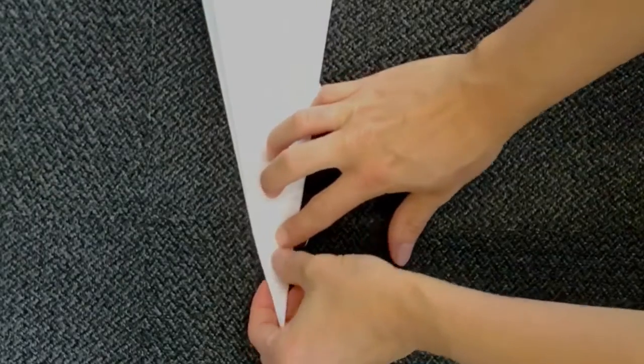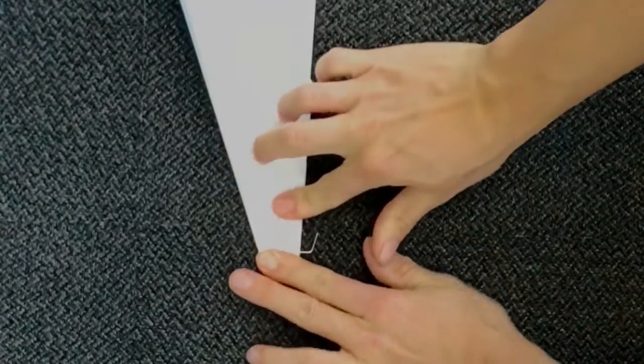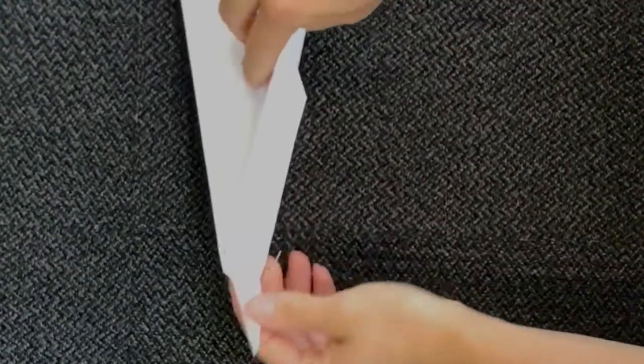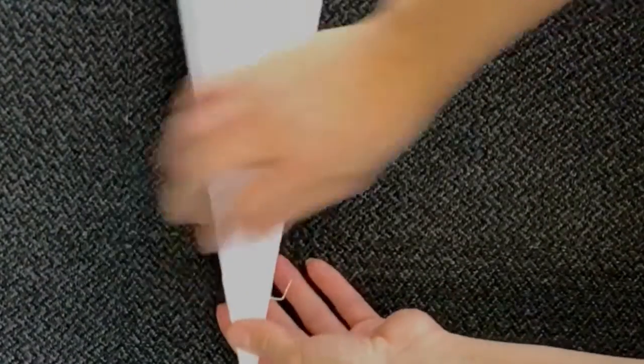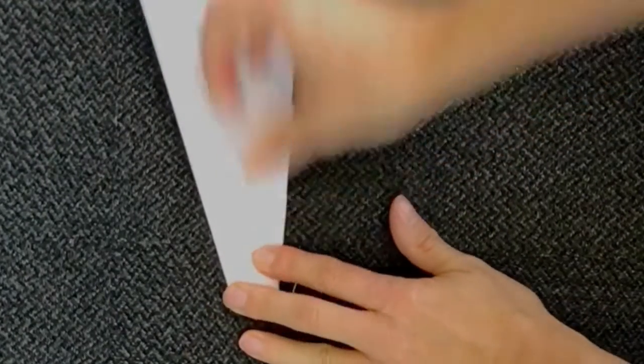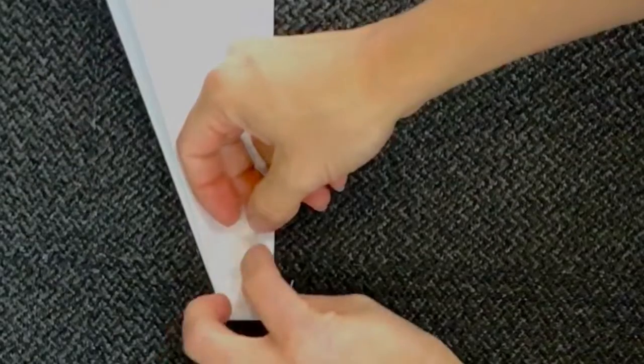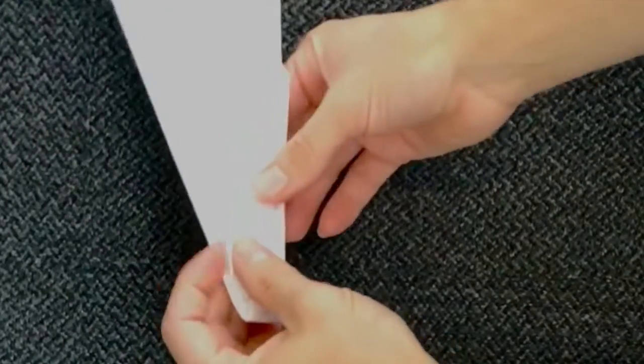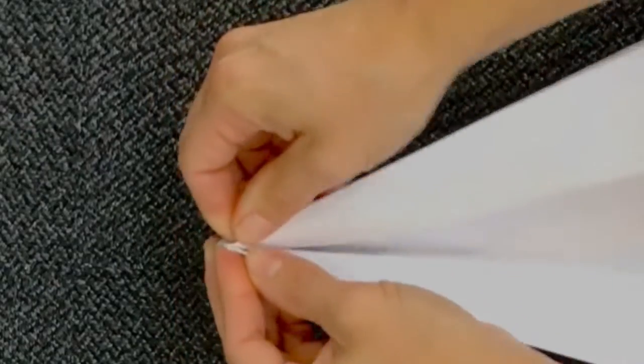And then we're gonna fold right where that paperclip is. We're gonna fold that tip in. But make sure your wings aren't closed like this. They got to be open like this. And then we're gonna fold that tip in. We'll tape that down too. And then you just need to fold the wings back open.